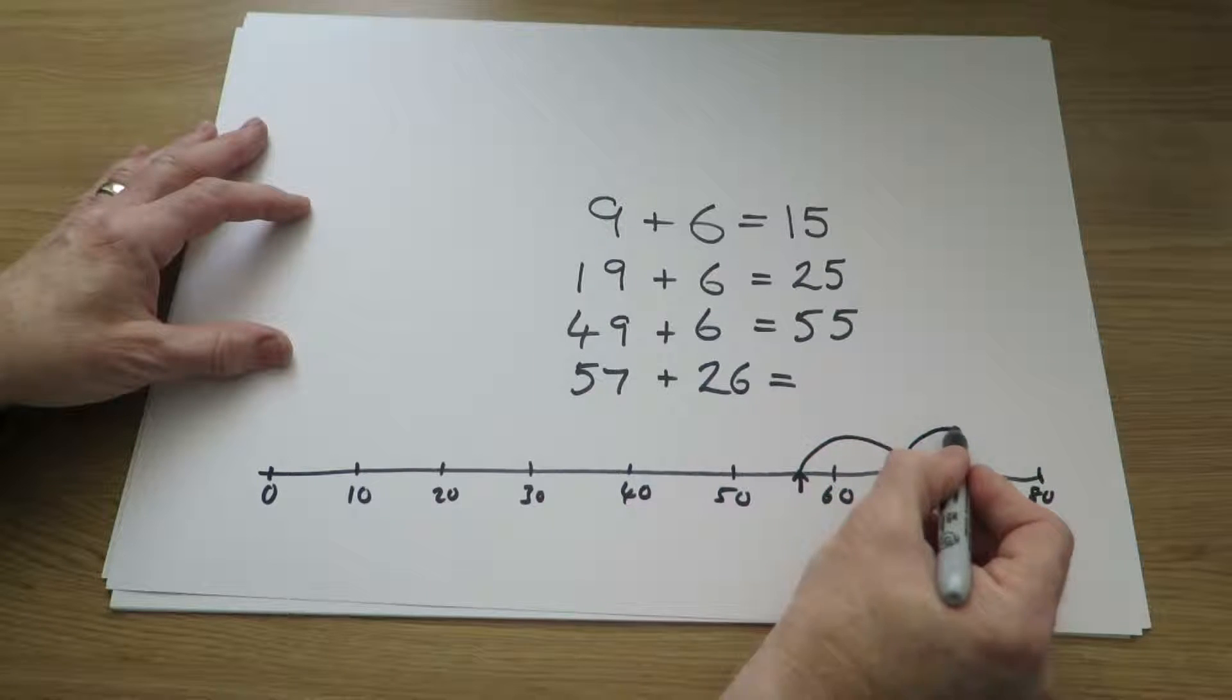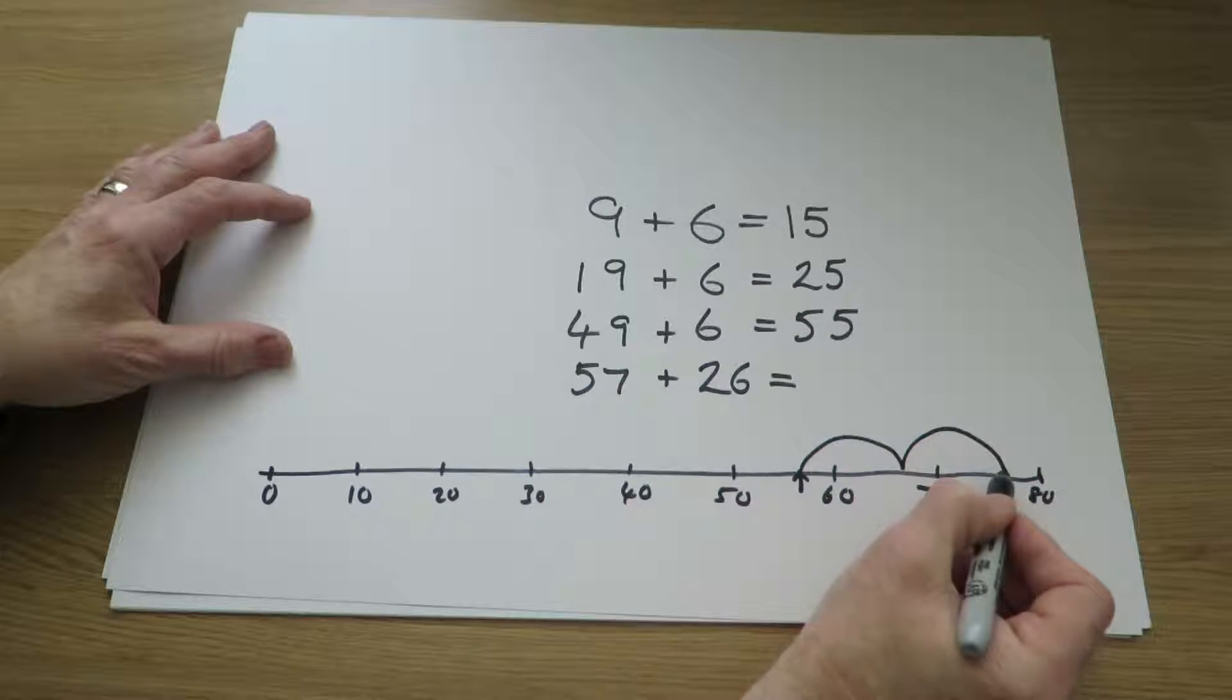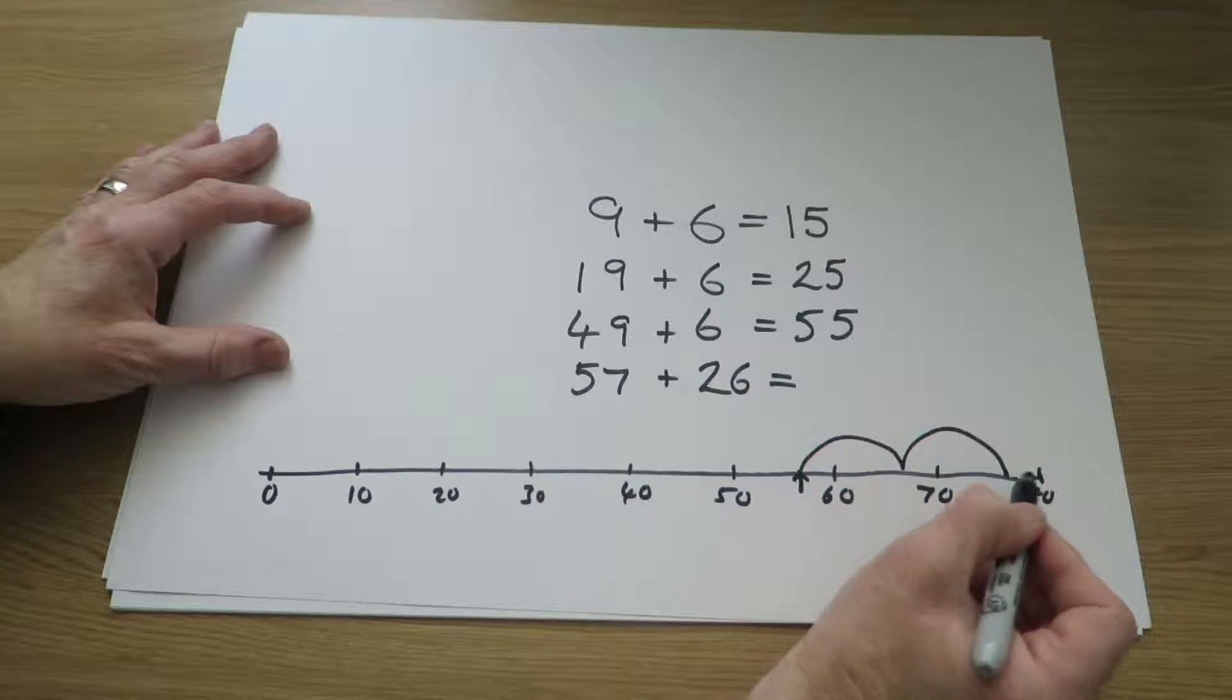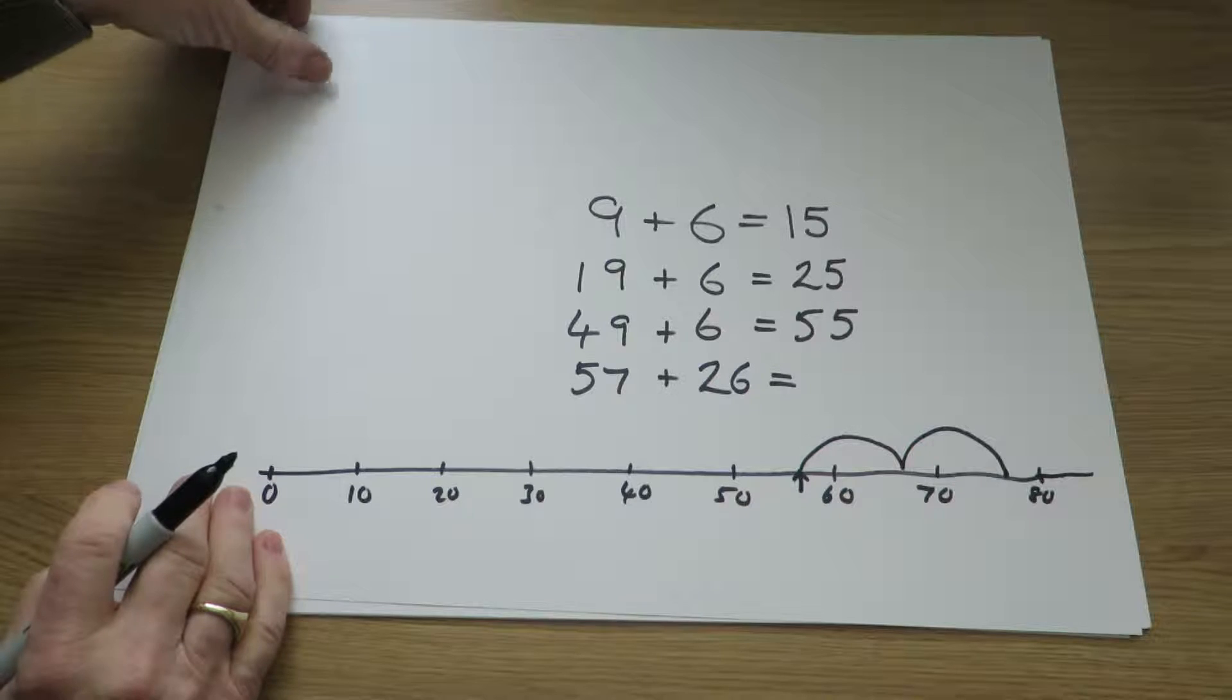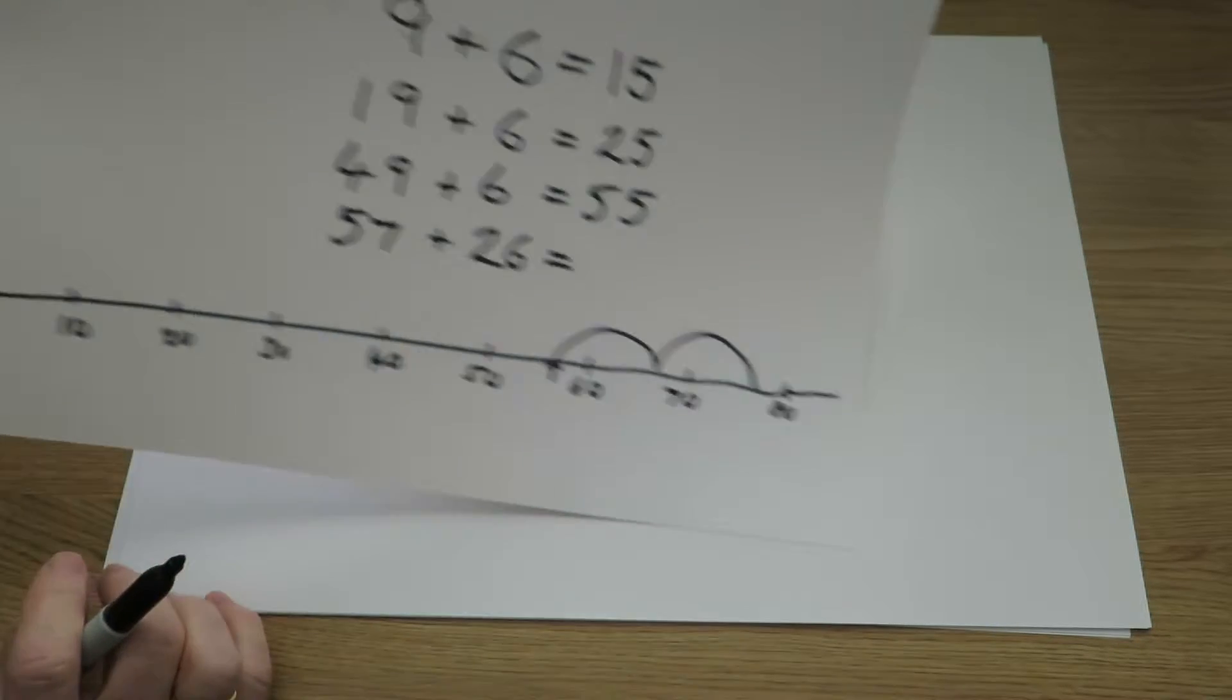So add 10, add 20, gets them to 77, then adding 6 on to 77, they will get to 83.